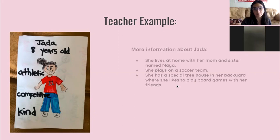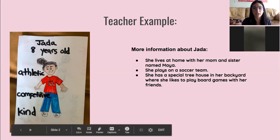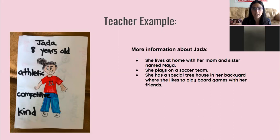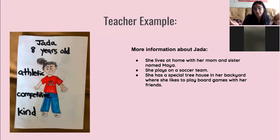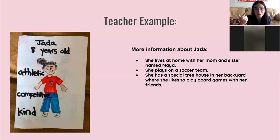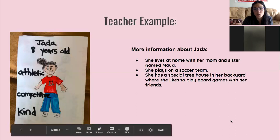Today I'm going to write a different adventure. Here's some more information I know about my character Jada: she lives at home with her mom and her sister Maya, she plays on the soccer team, and she has a special tree house in her backyard where she likes to play board games with her friends. These are all details that exist in real life. I've seen friends with tree houses, and playing soccer is something an eight-year-old girl could really do. Those are all true, real details.